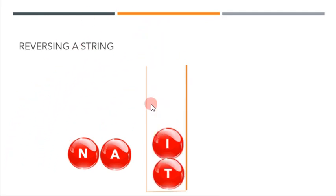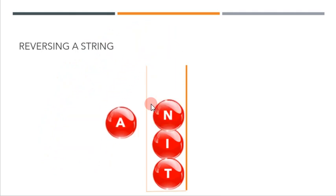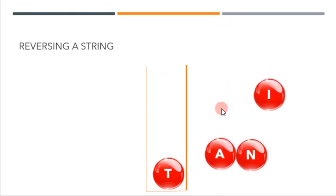Now if you traverse the stack from the top and print the characters one by one, what do you see? A is traversed and printed, then N, then I, and T. That's the string in reverse.